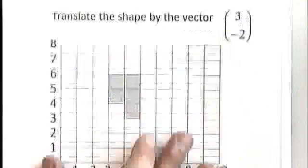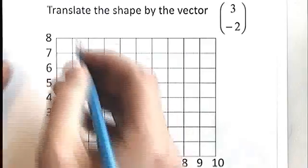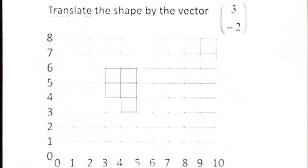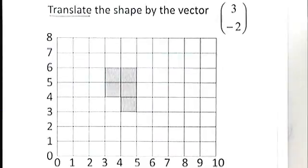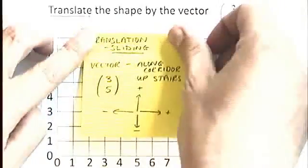So this question is asking us on a coordinate grid to translate the shape. Again, that means slide the shape around. So you can guess what I'm going to do. I'm going to trace it and move it around. And we've got to use the vector three minus two. Now in order to be able to use a vector, you need to know the following things.